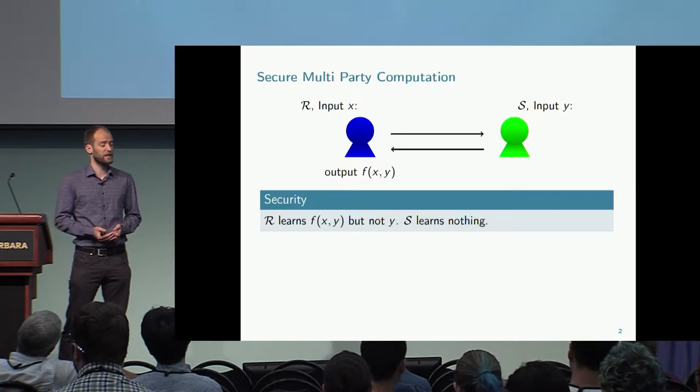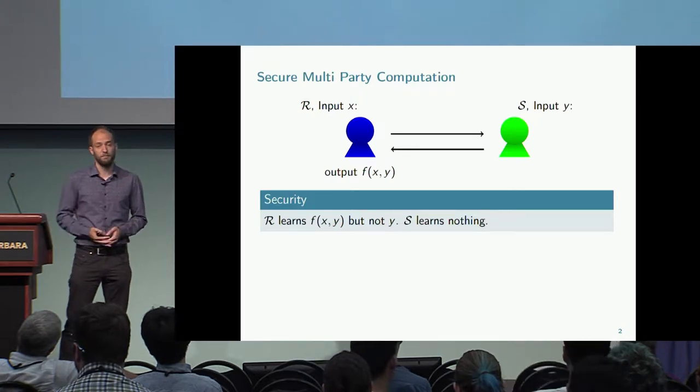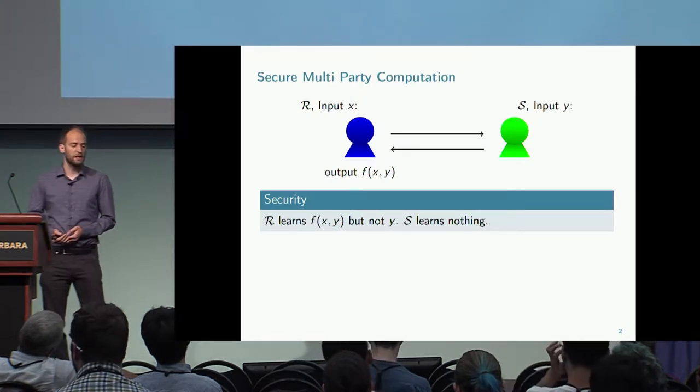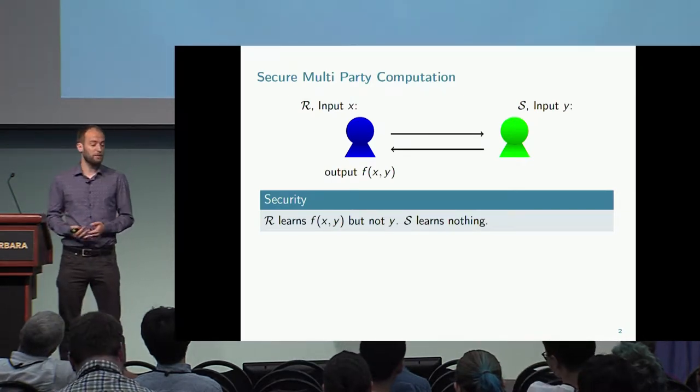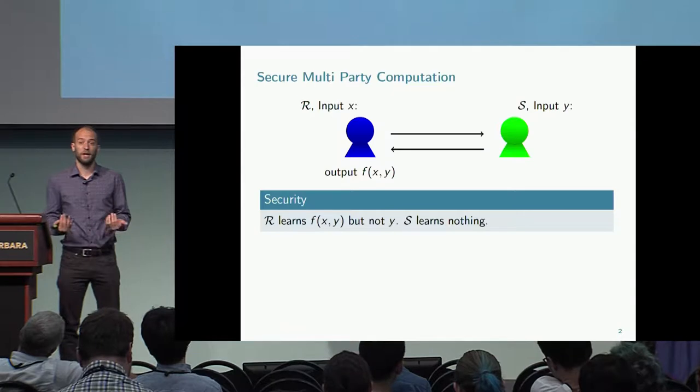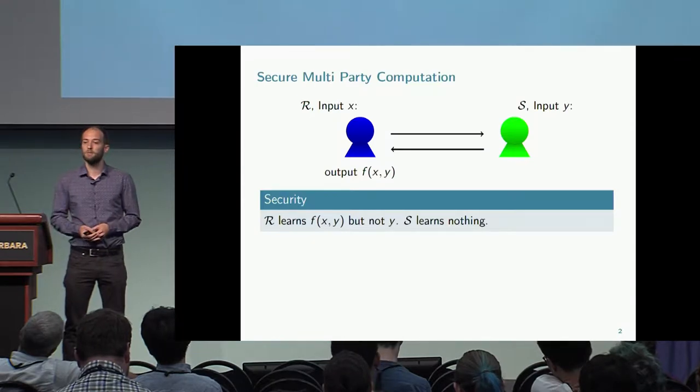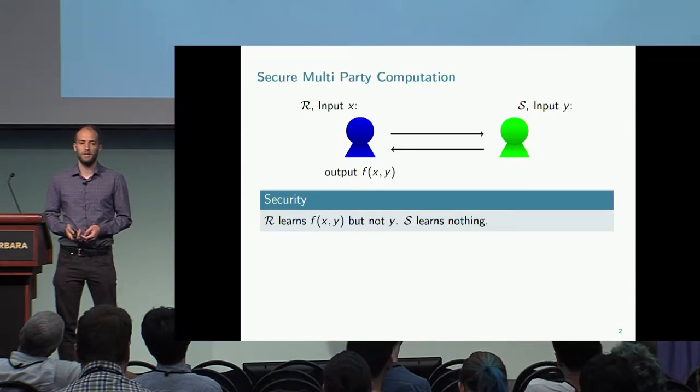Further, for the sender — party S — it should learn nothing: it should not learn anything about the input of party R.